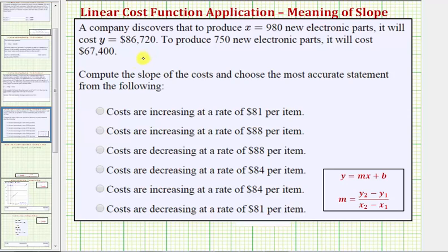Assuming the cost function is linear, we're asked to compute the slope and choose the most accurate statement from the following. The slope will tell us whether costs are increasing or decreasing, and by how much per item. If the slope is positive, costs are increasing; if negative, costs are decreasing.